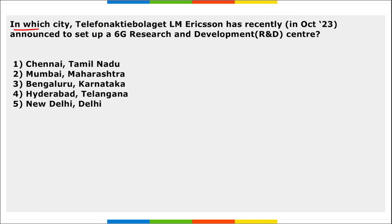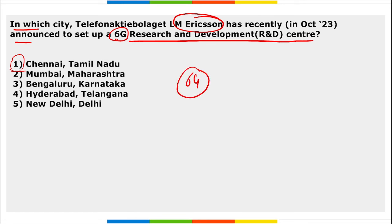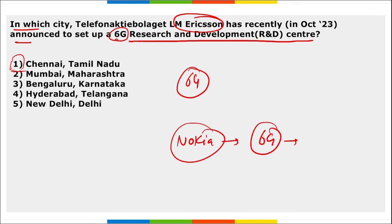Next: in which city has Ericsson announced setting up a 6G Research and Development Center? It is Chennai, Tamil Nadu. Ericsson is a Swedish telecommunication company. Also remember, Nokia has also established a 6G Lab — their Global Research and Development Center — in Bangalore.